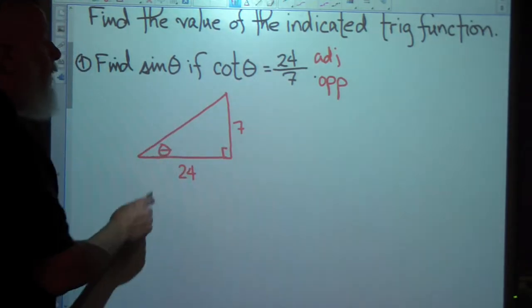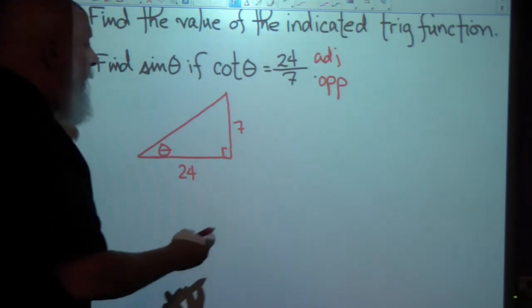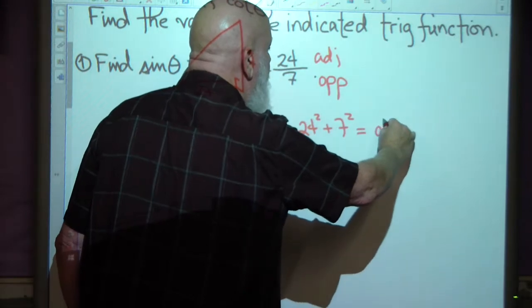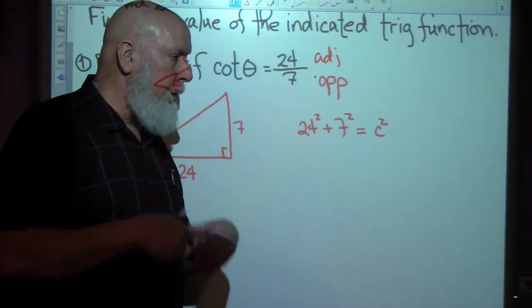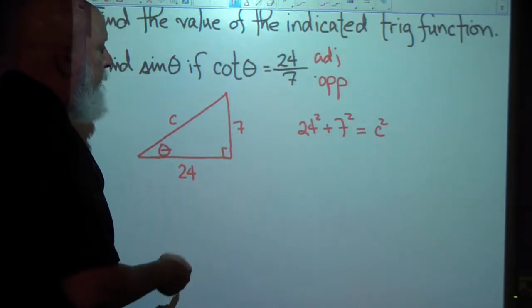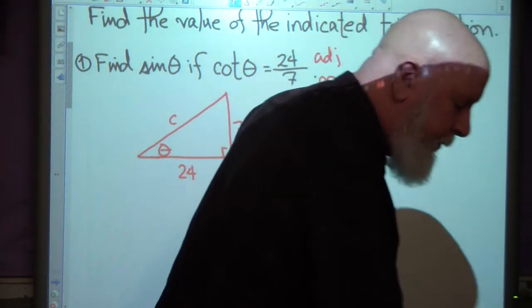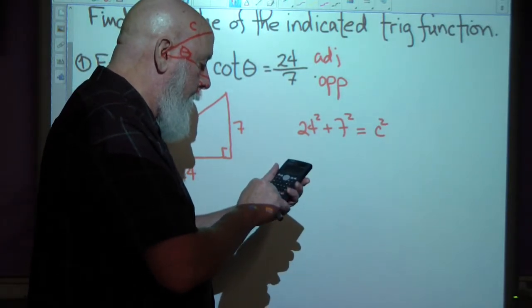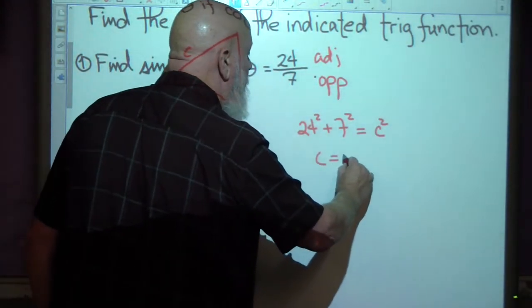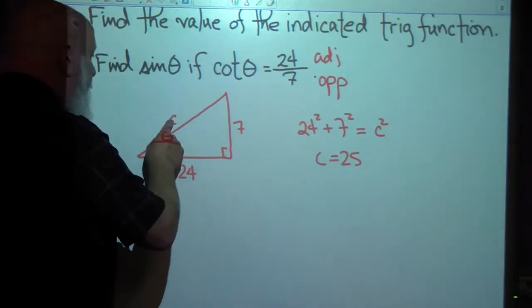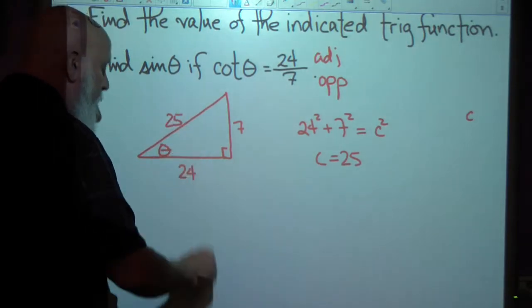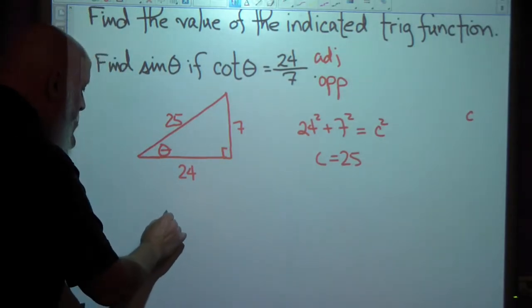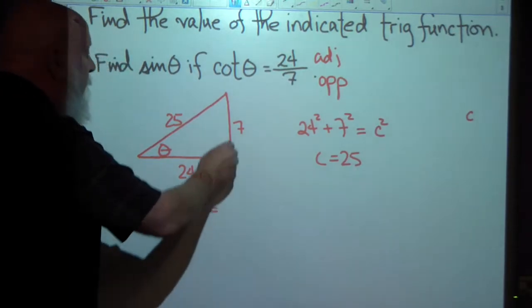The opposite would be 7, and I want to find the sine of theta — that means opposite over hypotenuse. In order to do that I need to know the hypotenuse, so I'll use the Pythagorean theorem: the sum of the squares of the legs equals the square of the hypotenuse, a² + b² = c². That gives us 24² + 7² = c², which equals 625, so c is 25. Now I have everything I need: sine theta equals opposite over hypotenuse, which is 7 over 25.